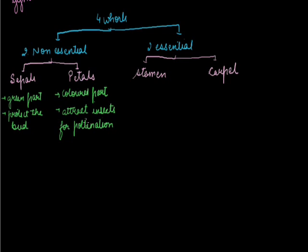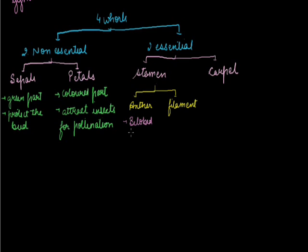Now we are dealing with the stamen, which is the main reproductive part of the flower. Stamen is further divided into parts: it has an anther and a filament. The anther is a bi-lobed structure; it is dithecous in nature, meaning it has two lobes.